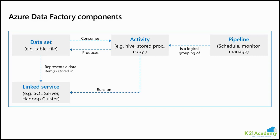The third component is called dataset. In database A and database B, from where we are pulling and loading data, there might be tables available — table A and table B. You have to represent those in the data factory configuration, specifying that you're reading from table A and writing into table B. You will create a source dataset and select table A, and a sink dataset and select table B. When the pipeline runs, data will be pulled from table A and written into table B.